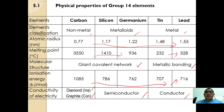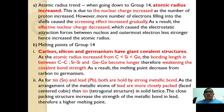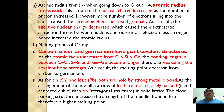Now let's look at the detailed explanation of each physical property. For atomic radius, when going down the group, nuclear charge increases as the proton number increases. However, more electrons are filling in the shells, causing the screening effect to increase gradually. As a result, the effective nuclear charge decreases, and therefore the atomic radius becomes larger.